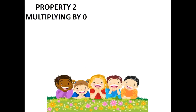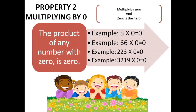Property two is multiplying by zero. Multiply by zero and zero is the hero. The product of any number with zero is zero. For example, five times zero is zero. Sixty-six times zero is zero. Two hundred and twenty-three times zero is zero. Three thousand two hundred and nineteen times zero is zero — zero is the hero because the product you get is always zero.